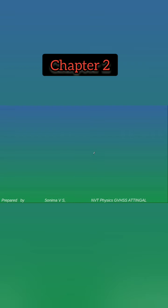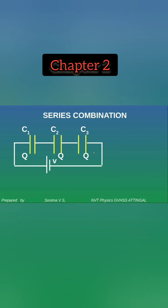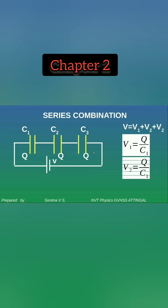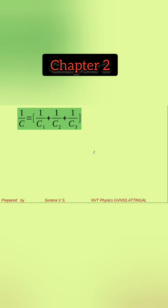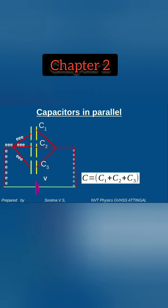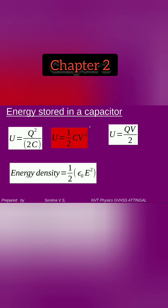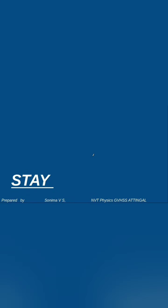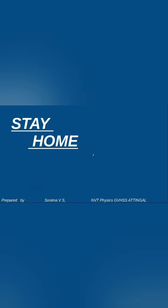To recap: for series combination, 1 by C equals 1 by C1 plus 1 by C2 plus 1 by C3. For parallel combination, C equals C1 plus C2 plus C3. The energy stored in a capacitor is U equals q squared by 2C, and the energy density is half epsilon-zero E squared. Thank you, see you next time.